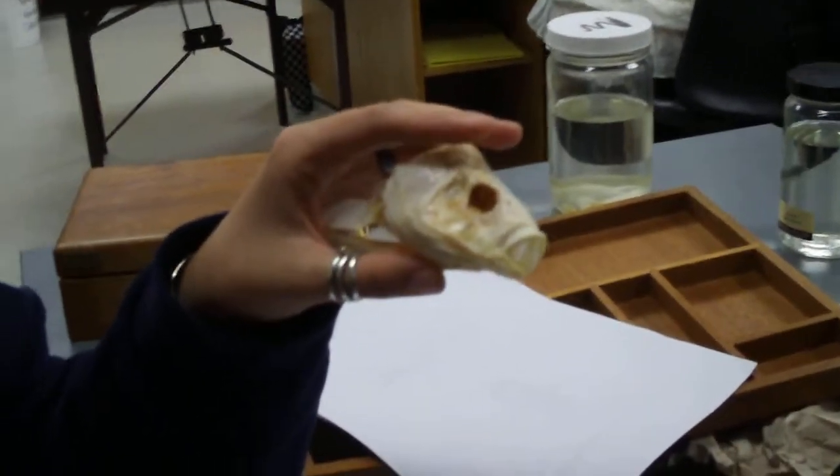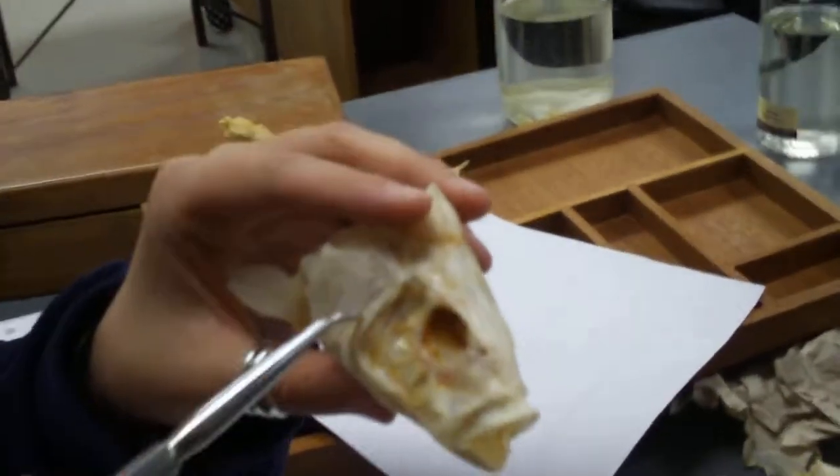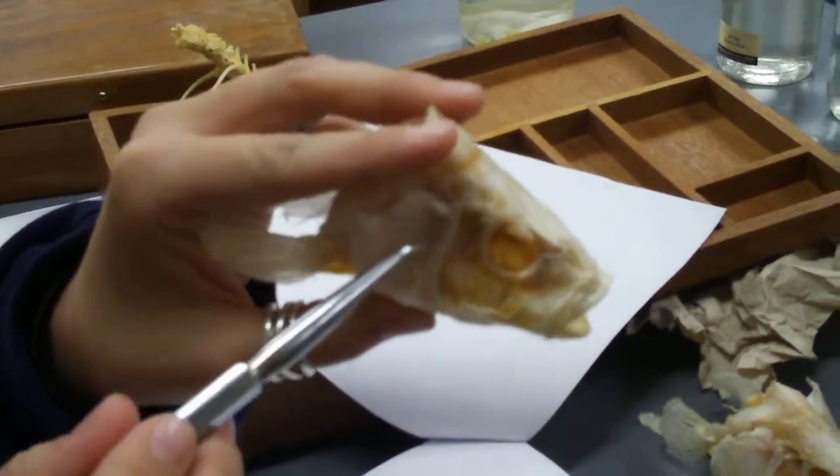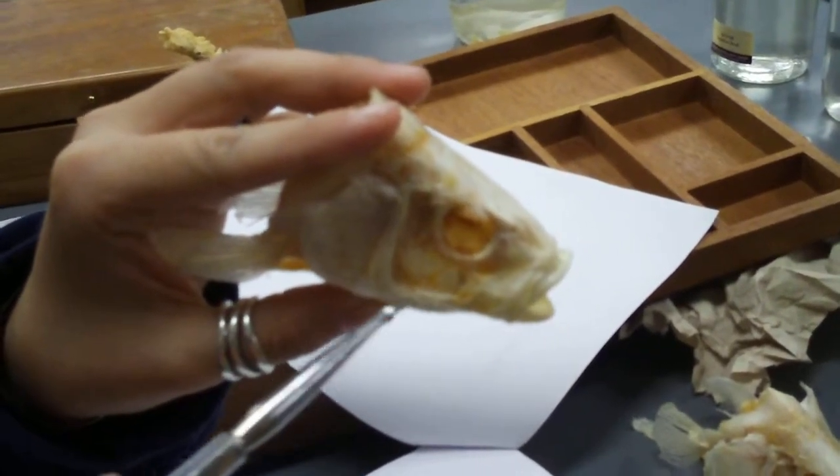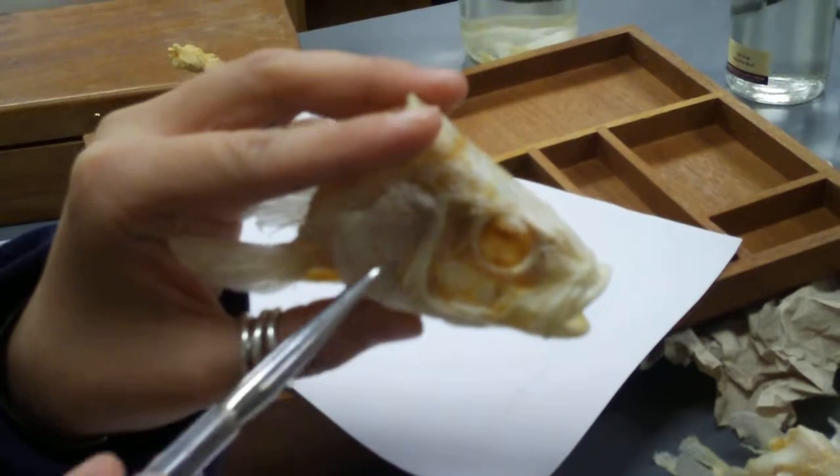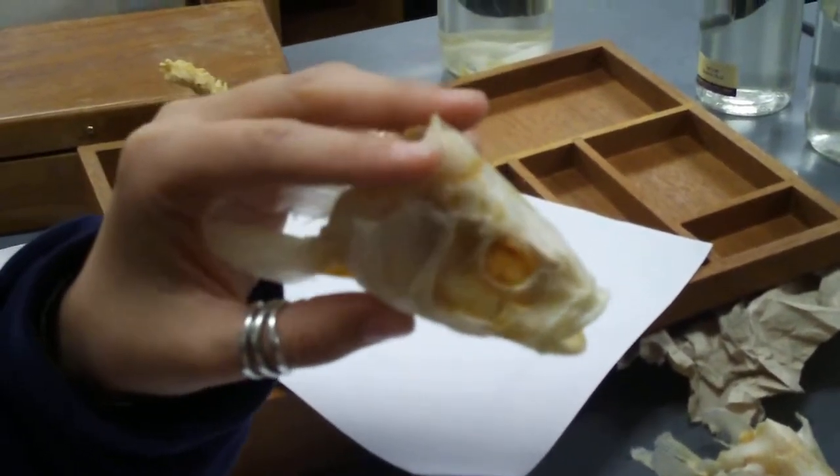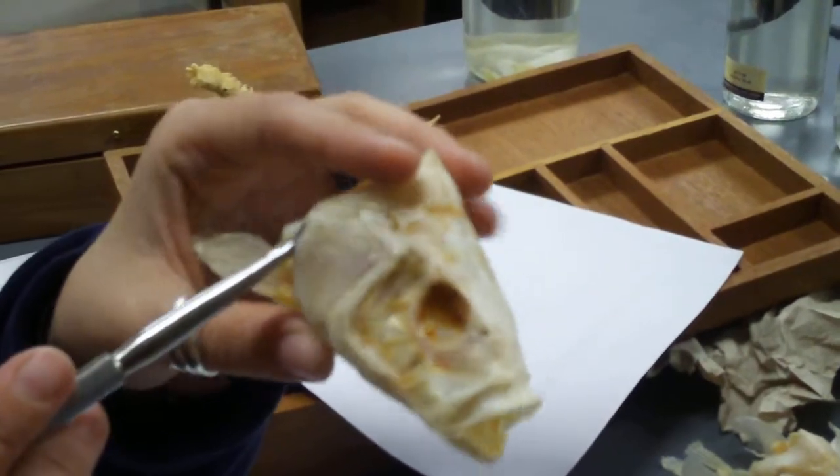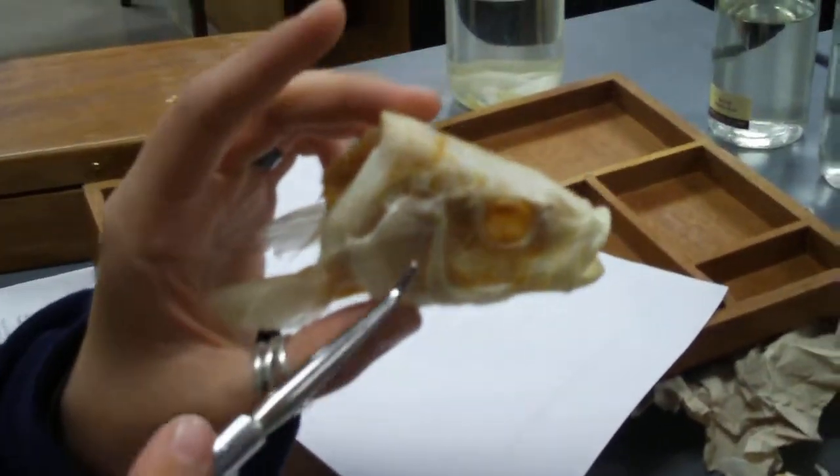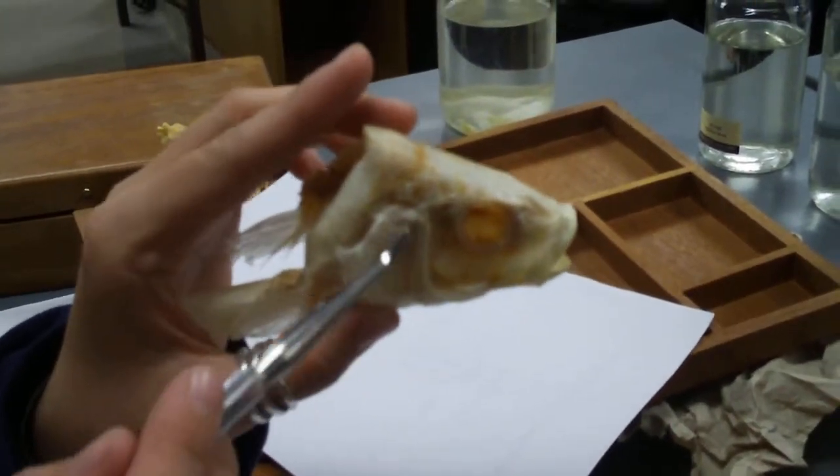Okay. Then you have your pre-operculum which is kind of this rough, kind of thin L-shaped thing. That's the pre-operculum. And then you have the operculum which is this large part right here. Can you guys all see that?